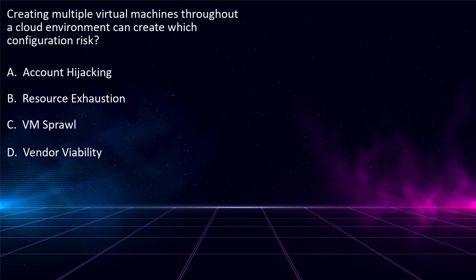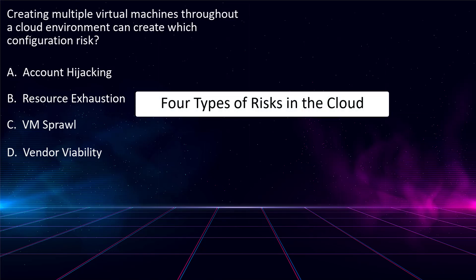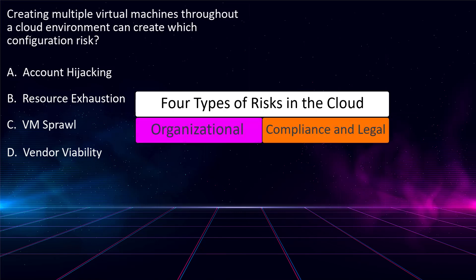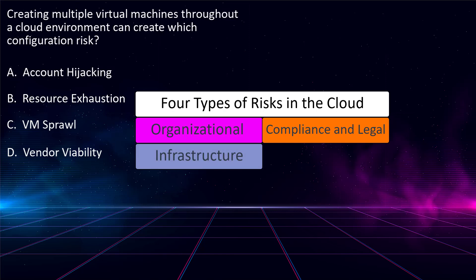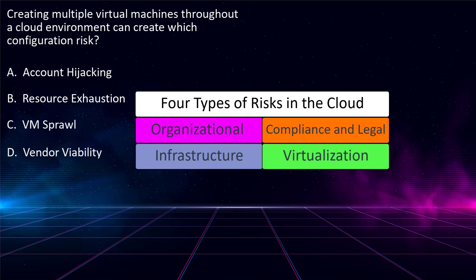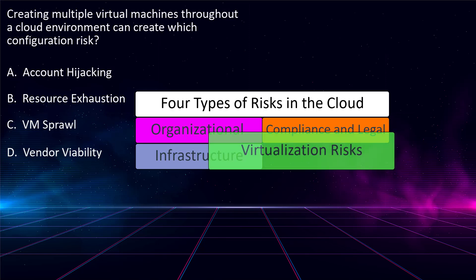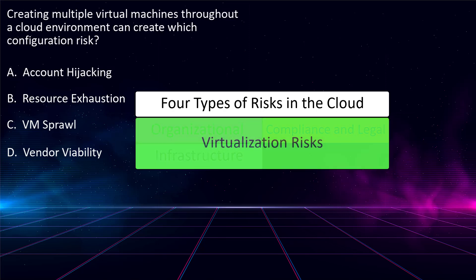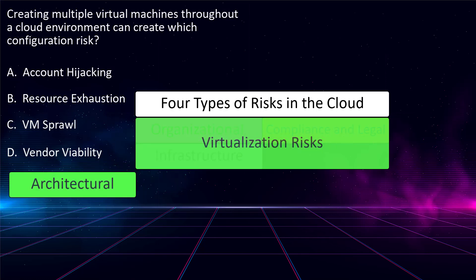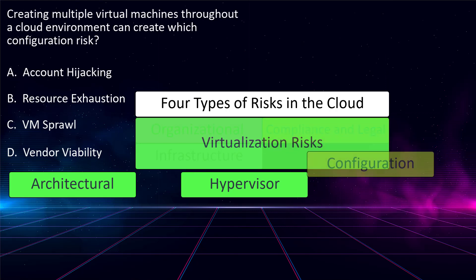Let's break down these choices. There are four types of risks to consider in the cloud: organizational risks, compliance and legal risks, cloud infrastructure risks, and virtualization risks. Let's focus on virtualization risks. Within virtualization risk, there are three subcategories: architectural risk, hypervisor software risks, and configuration risks.